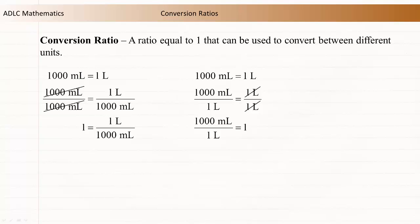Again, this is a ratio equal to 1, so it too is a conversion ratio. Now we have three representations of the same information: an equality of two different units, and two ratios of different units that are each equal to 1.